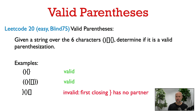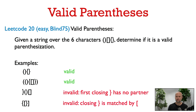Now let's look at a bad example. This is invalid because the very first character is a closing curly bracket that has no partner. Here's another bad example: we have an open square bracket immediately followed by a closing curly bracket, and those don't match. So this is not a valid parenthesization.